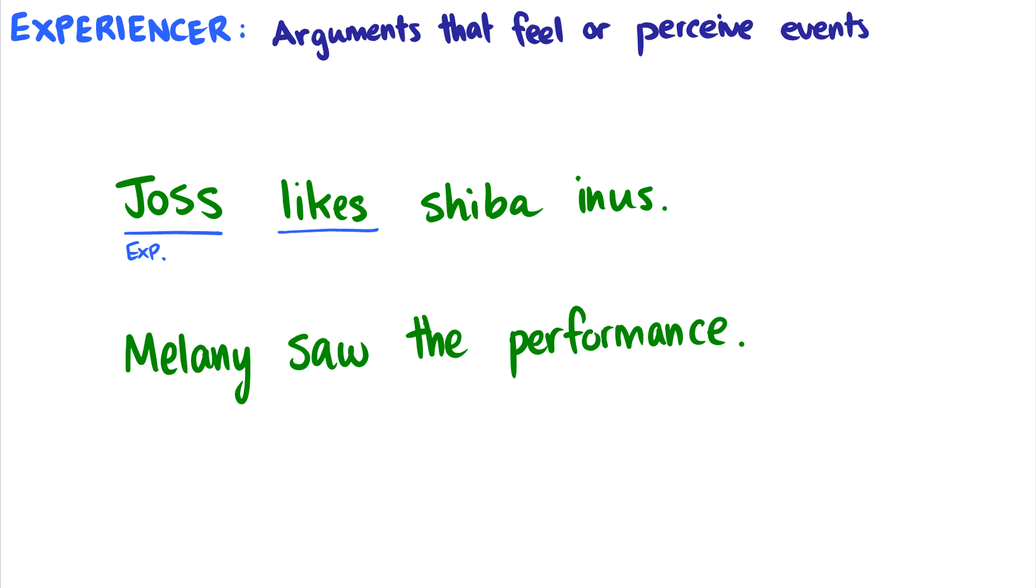Now, why isn't this an agent? Well, to like something, you don't actively initiate liking. It's a feeling. It's an experience. It is a perception of something. The fact that Joss likes Shiba Inus, she's not doing it intentionally. It just happens to be the fact or happens to be the case that she likes Shiba Inus. Or what about this other sentence? Melanie saw the performance?